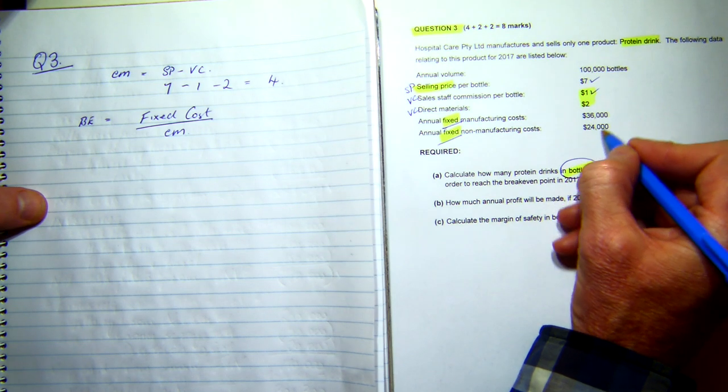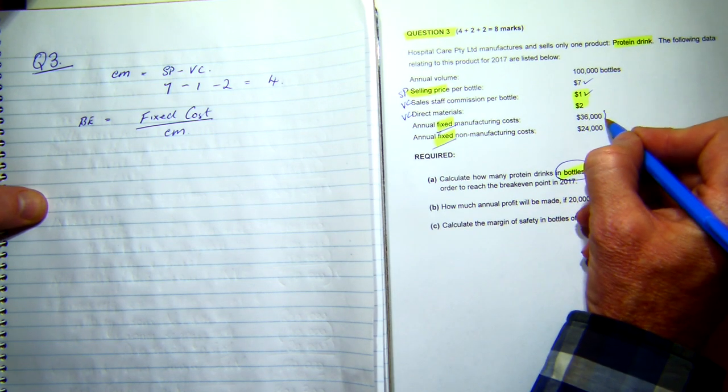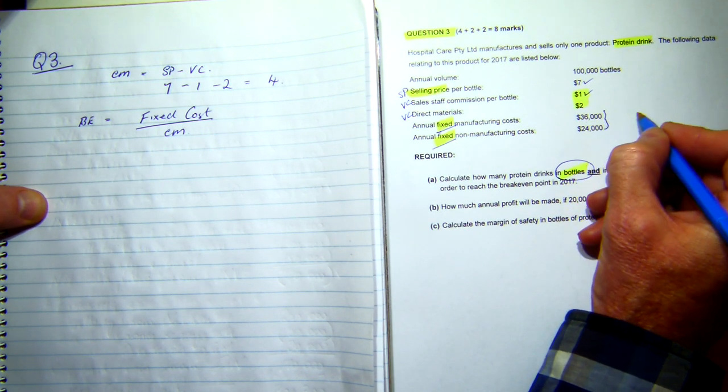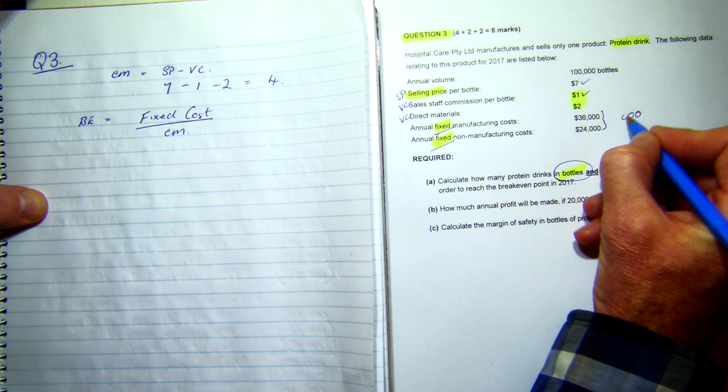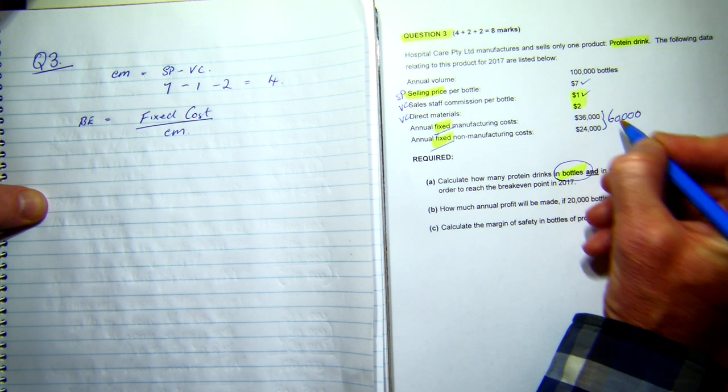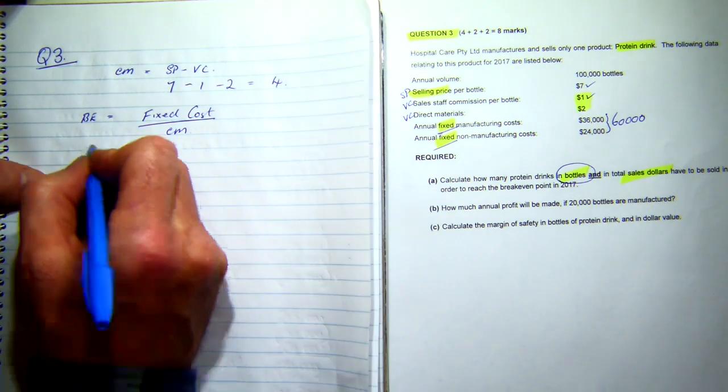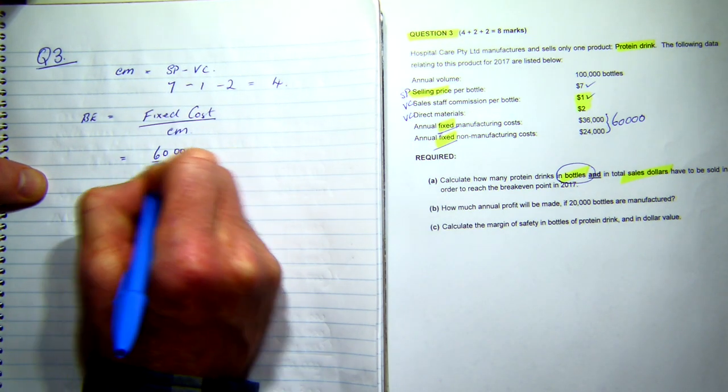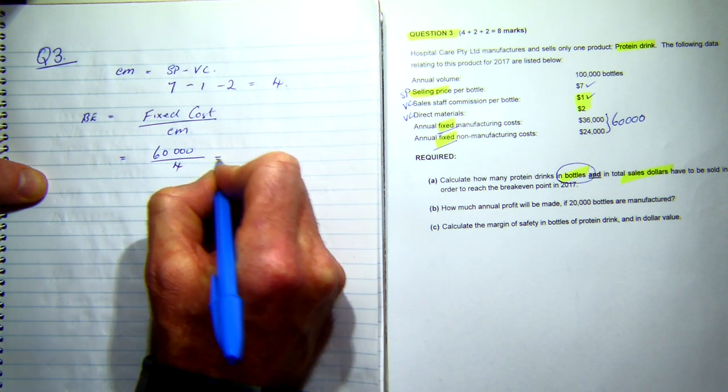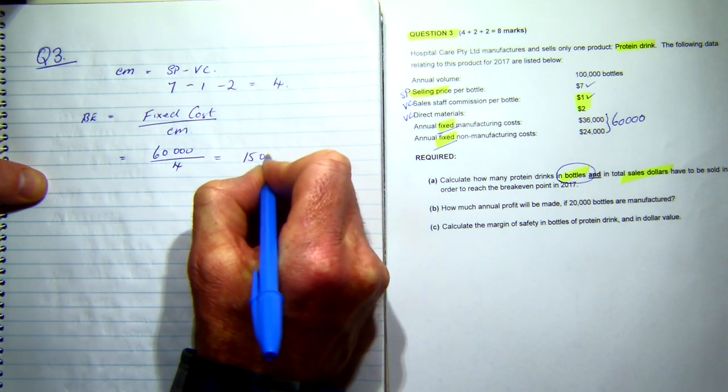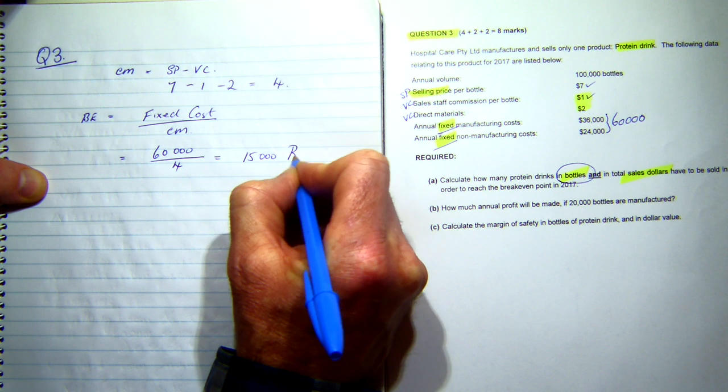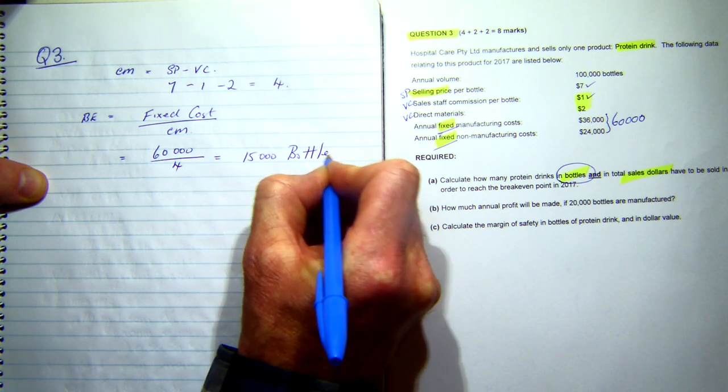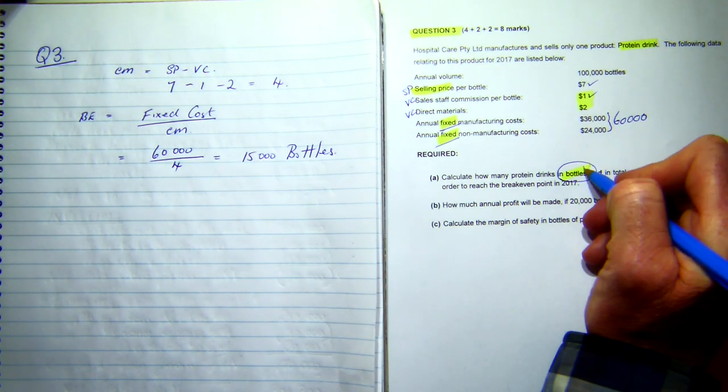Now, my fixed costs are thirty-six and twenty-four thousand, so that comes together to be sixty thousand dollars. So my break-even equals sixty thousand divided by four equals fifteen thousand bottles. So that count ticks off that one.